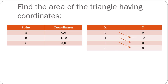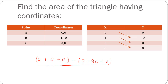Let's work it out. You multiply 0 with 10 — you get 0. You multiply 4 with 0 — you get 0. You multiply 8 with 0 — you get 0. Now for the y cross-multiplication: 0 with 4 gives 0, 10 with 8 gives 80, and 0 with 0 gives 0. The answer is this subtraction divided by 2 with a modulus. So the x sum is 0, the y sum is 80. That gives (0 minus 80) divided by 2, which is minus 40, and the modulus of minus 40 is 40. So 40 square units is the area of triangle ABC.